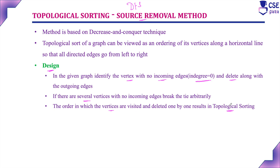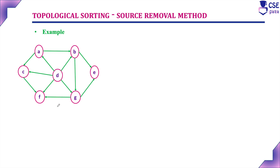Very simple logic. For example, consider this graph. For this given graph we need to find the topological sorting. First we need to ensure whether the given graph forms a cycle or not. If the graph forms a cycle, we cannot implement topological sorting — that is the main restriction. So first we need to ensure whether the given graph forms a cycle or not.